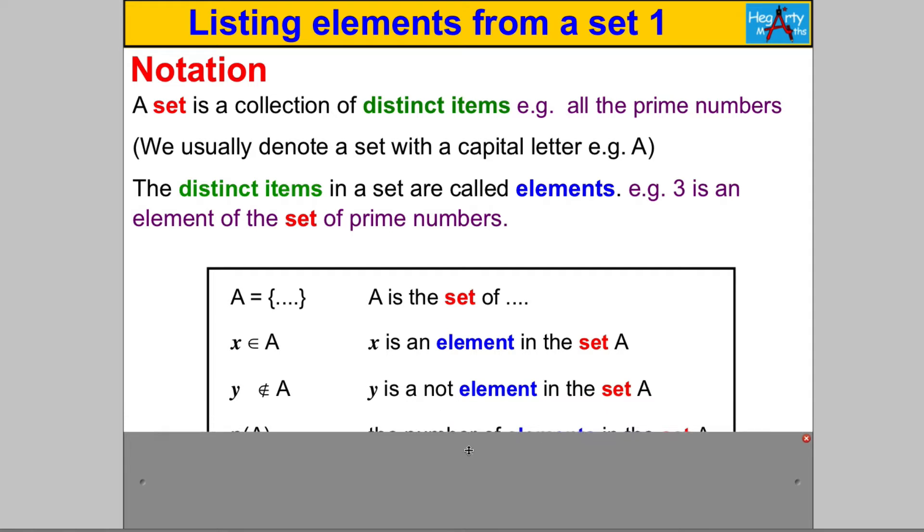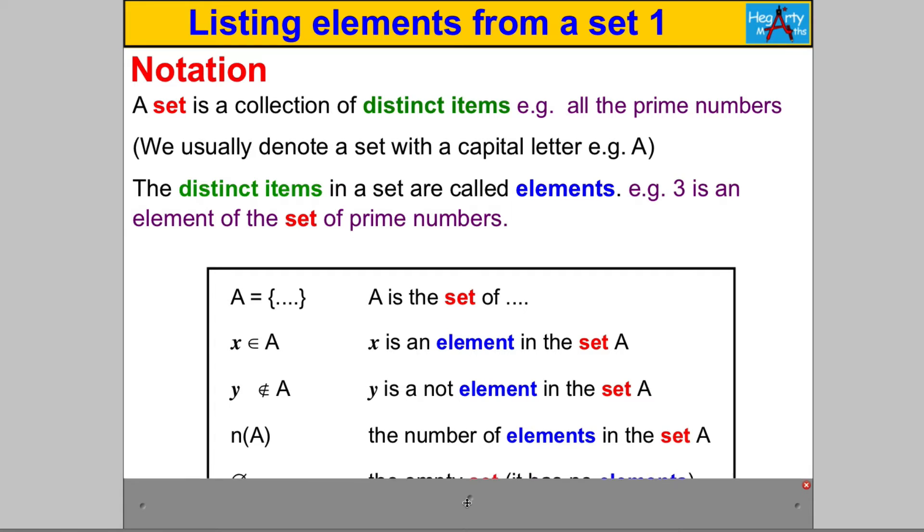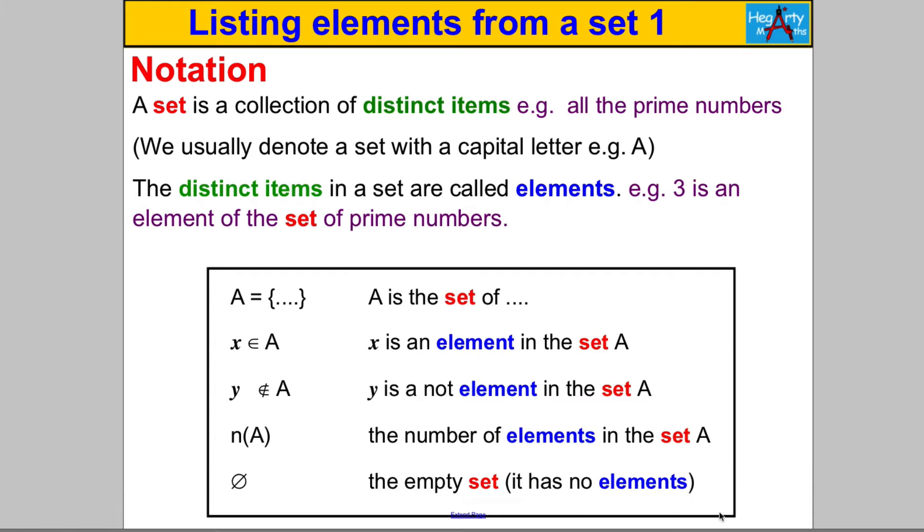If you see this n(A), that's asking you to count how many elements in the set. It is the number of elements in the set. There may be 5, 10, 20, whatever, infinitely many elements in the set. n(A) is asking you what is the number of elements in the set. Lastly, if you ever see this symbol here, it just means the empty set. It is the set with no elements inside it.